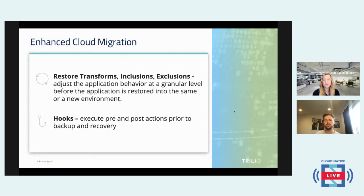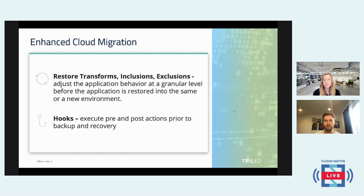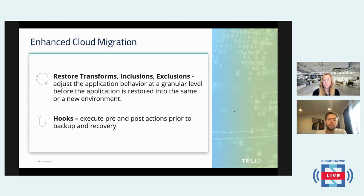For inclusions and exclusions, this helps you get very granular. Once you do a backup of an entire namespace on your core cluster but don't want to restore the entire namespace to your edge cluster, you can include certain components and exclude others to optimize your usage of that edge cluster. Since edge clusters are significantly smaller, you probably shouldn't run everything that's on the core. We also have hooks — at Trilio we use pre and post hooks for before and after a backup occurs, which allows you to execute any command you need before and after that backup takes place.